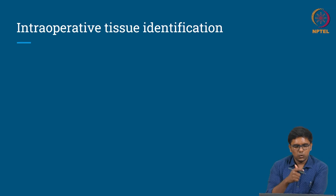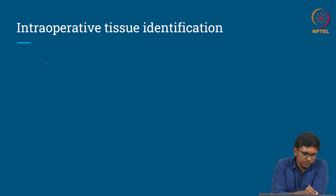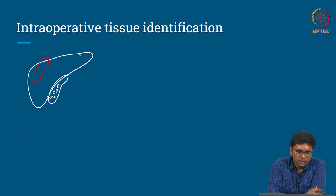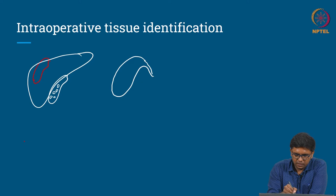Let us take the example of a gallbladder surgery. The gallbladder is a pear-shaped organ present on the under surface of the liver. People tend to form stones inside the gallbladder, and the only procedure available for treatment is removal of the gallbladder, which is called cholecystectomy. This gallbladder has two connections: one is the cystic duct and another is the cystic artery, and there is a vital structure called the bile duct running alongside the gallbladder.